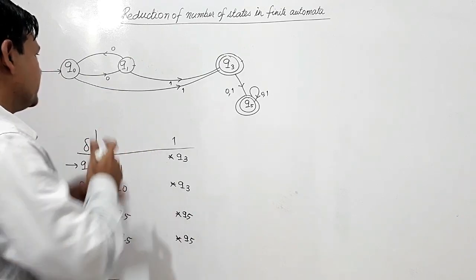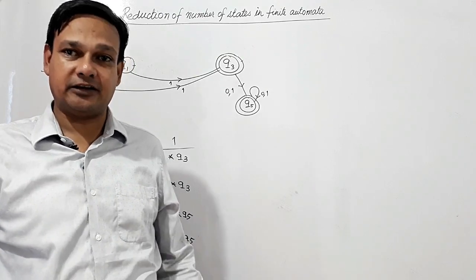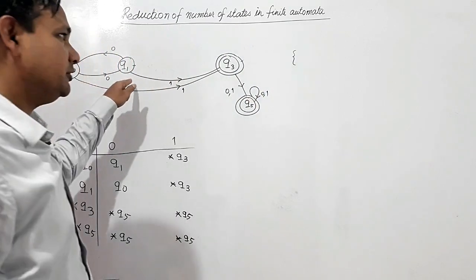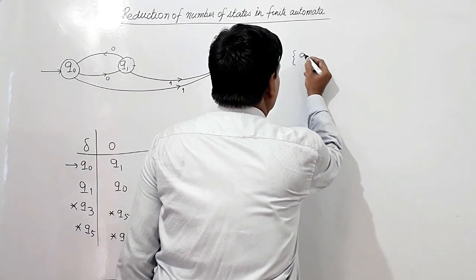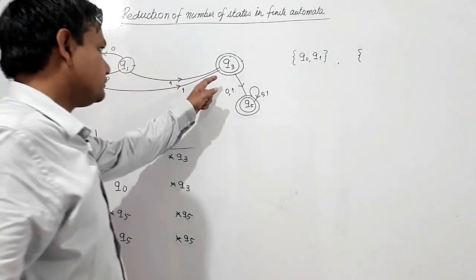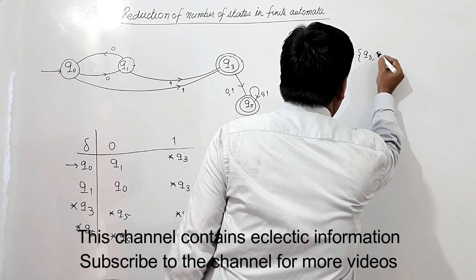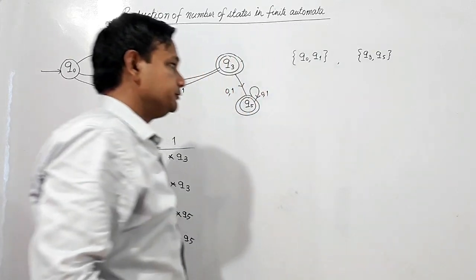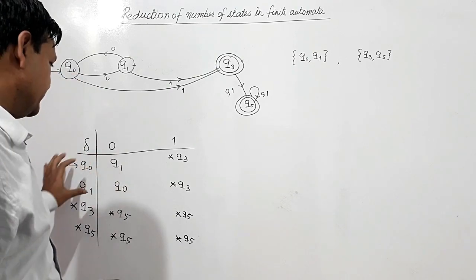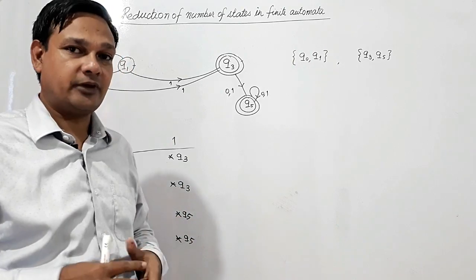Now we partition these states into two parts: the set of non-final states and the set of final states. The set of non-final states is {Q0, Q1} and the set of final states is {Q3, Q5}. We then check whether {Q0, Q1} can be further divided, and whether {Q3, Q5} can be divided.